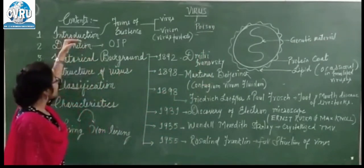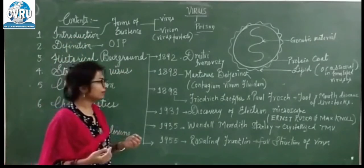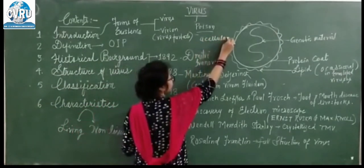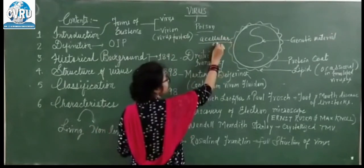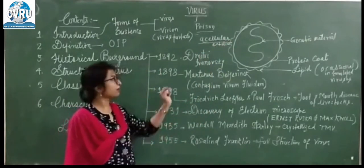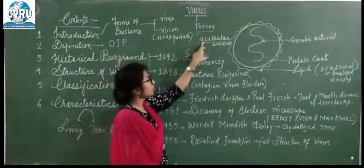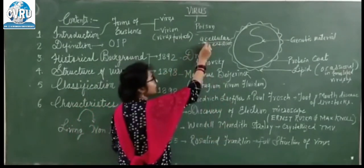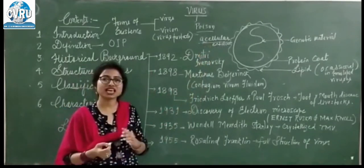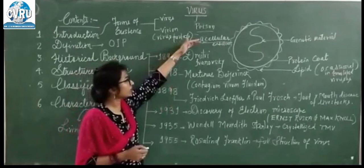अब हम देखते हैं कि viruses दरअसल क्या होते हैं? What are the chief characteristics of viruses? Viruses are called A-cellular entities. A-cellular का मतलब होगा कि ये कोशिका-रहित होते हैं — cell नहीं होती. Virus एक particulate matter होता है. Viruses are A-cellular in nature.